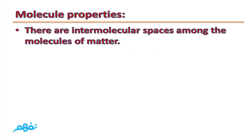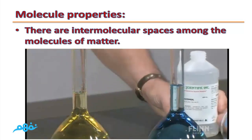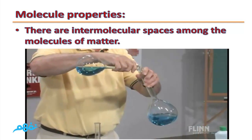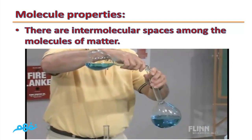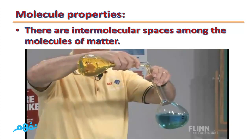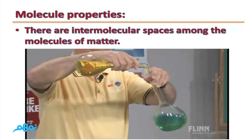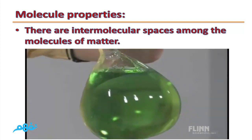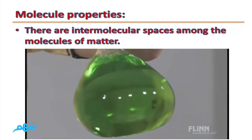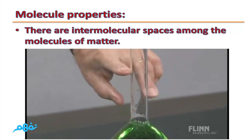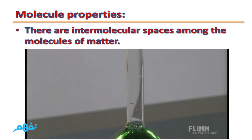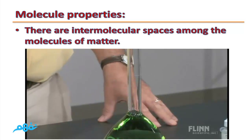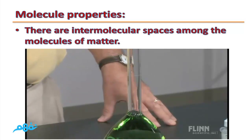The second property is that there are intermolecular spaces among the molecules of matter. We have a very important experiment to prove this. It is done by preparing 500 cubic centimeters of water and 500 cubic centimeters of ethyl alcohol. They are both colorless, but we add some color to make them visible. By adding the 500 cm³ of water to 500 cm³ of ethyl alcohol, we find that the final volume will be less than 1,000 cm³, because there are intermolecular spaces between molecules of matter that can be filled by other molecules.